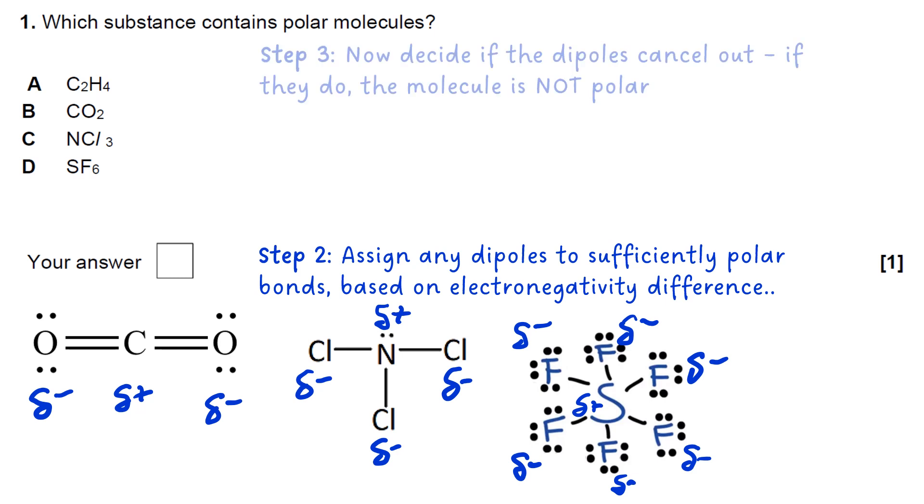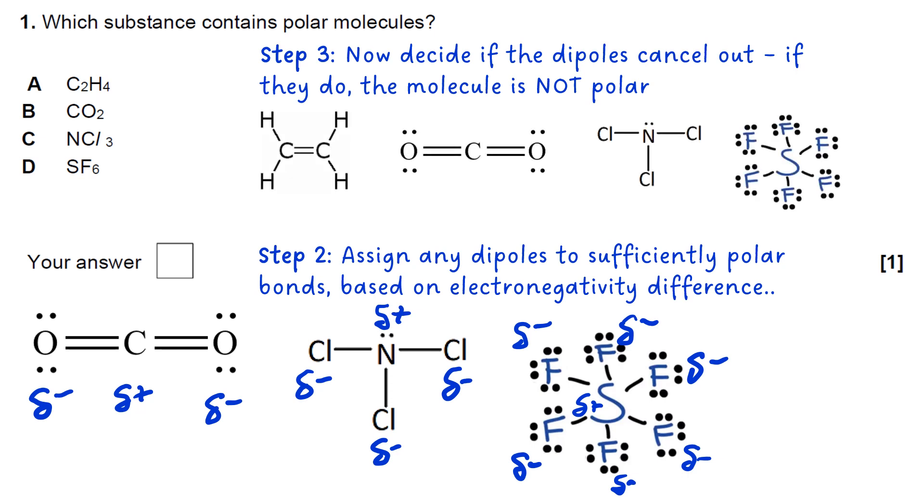The next thing to do is decide if the dipoles cancel out. If they do, the molecule is not polar. The carbon hydrogen electronegativity difference in ethene is too small to have truly polar bonds. The carbon dioxide, like we talked about in our example a couple of minutes ago, this is non-polar because the dipoles cancel. So it's not that one either.